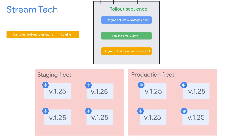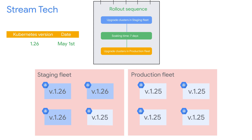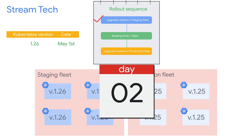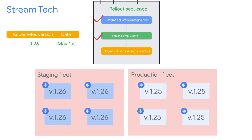Now let's assume a new version, 1.26, is scheduled for the 1st of May. Since StreamTech has enrolled all their clusters in a release channel, the upgrade begins automatically on or after May 1st in this sequence. GKE upgrades all clusters in the staging fleet to 1.26. Once the upgrade in the staging fleet is complete, the soaking period — in this case seven days — begins. When the soaking period is complete, GKE begins upgrading the clusters in the production fleet.